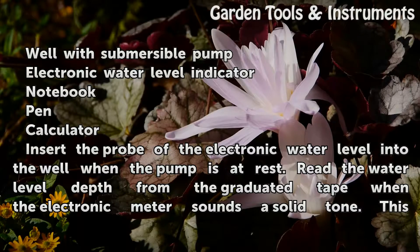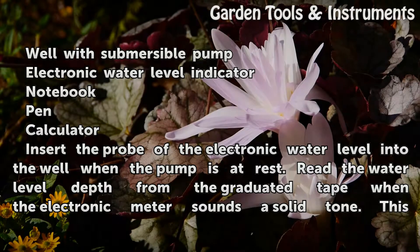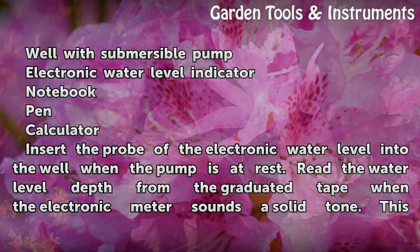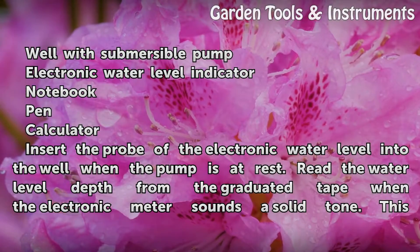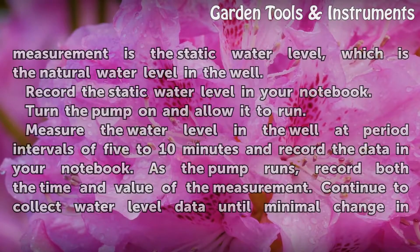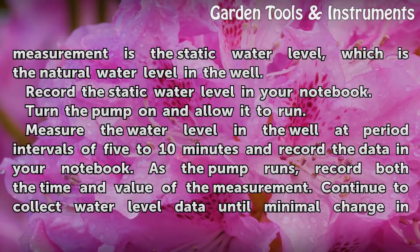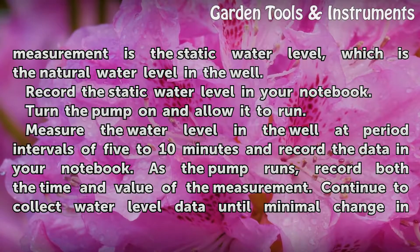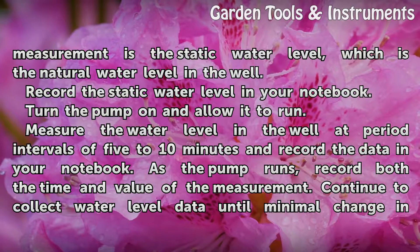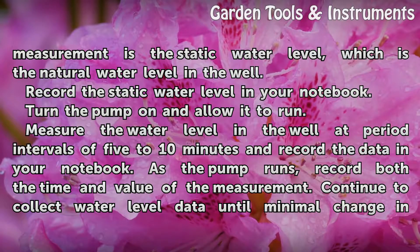Insert the probe of the electronic water level indicator into the well when the pump is at rest. Read the water level depth from the graduated tape when the electronic meter sounds a solid tone. This measurement is the static water level, which is the natural water level in the well. Record the static water level in your notebook.